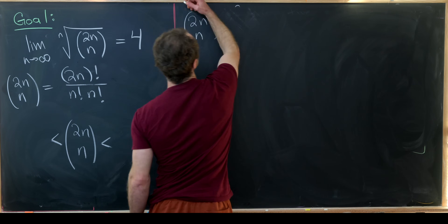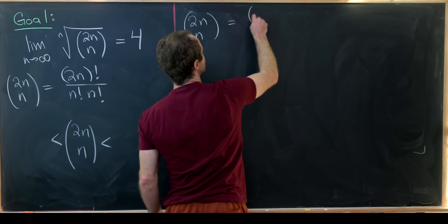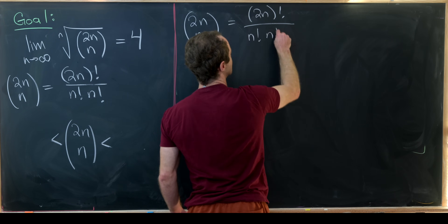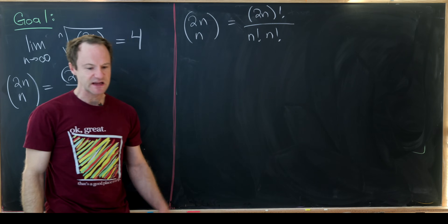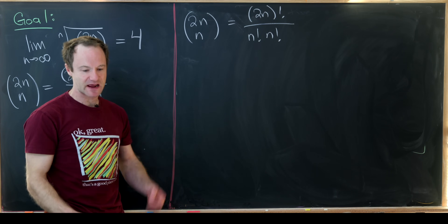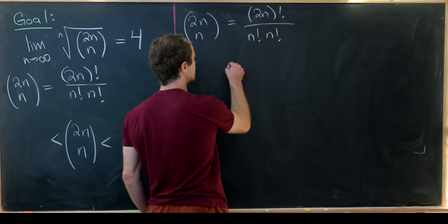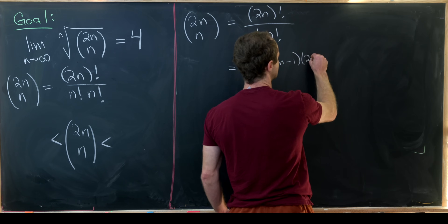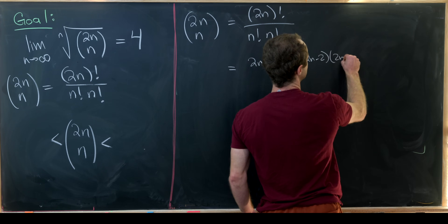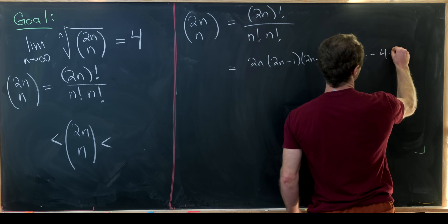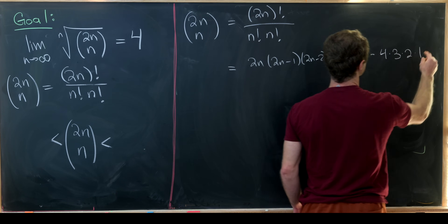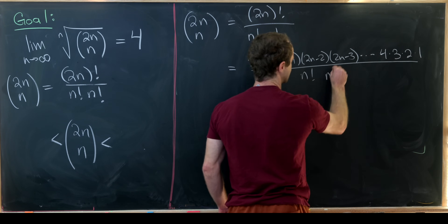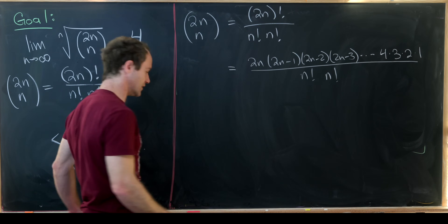So we've got 2n choose n. Writing that via the definition again: we've got 2n factorial over n factorial times n factorial. Now I'll take that 2n factorial and expand it: this is going to be 2n times 2n minus 1 times 2n minus 2 times 2n minus 3, all the way down to 4 times 3 times 2 times 1. And in the denominator we still have n factorial times n factorial.